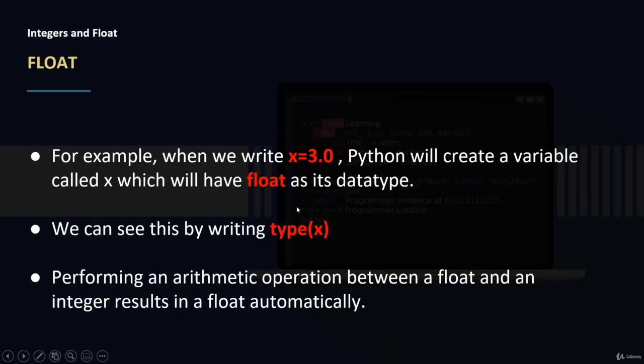If we write type of X, it will return Float. And performing an arithmetic operation between a Float and an Integer in Python results in a Float automatically.